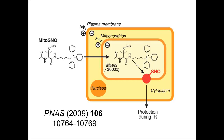In a heart attack, blood flow to the heart decreases for about 30–40 minutes as a blood vessel is blocked by a blood clot. Typically in a hospital, we remove that clot — for example, by putting in a catheter and stent into the coronary artery — and blood flows back into the heart. However, when that blood hits the ischemic tissue, this reperfusion produces a burst of reactive oxygen species from the mitochondria, underlying a lot of the damage. It's a catch-22: we have to restore blood to the ischemic heart, but in doing so we produce a burst of damage.